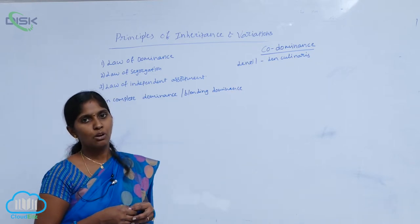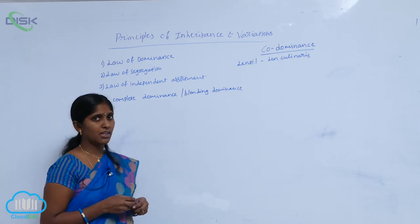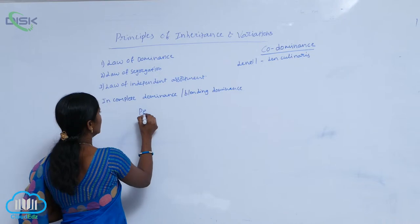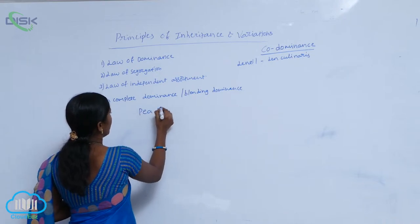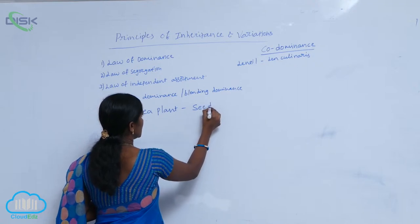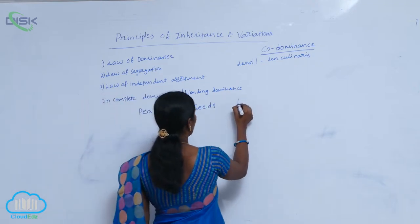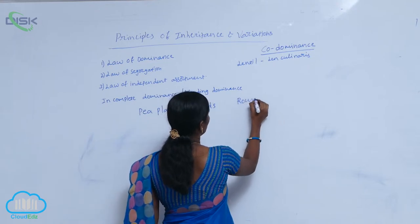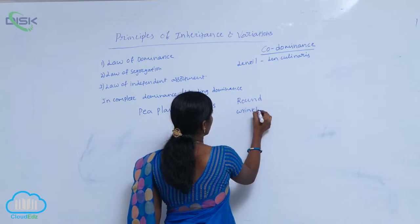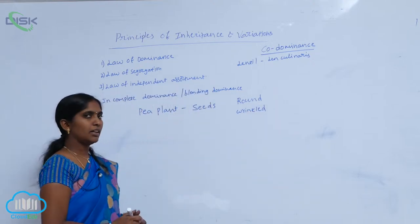This is an exception to the law of dominance. Another example is the pea plant. The pea plant also produces seeds - two types of seeds. One is the round seed, and another is the wrinkled seed. So the shape of the seeds is different: round and wrinkled.